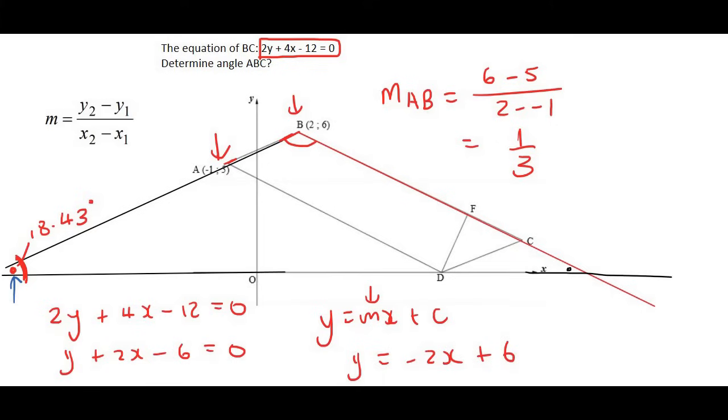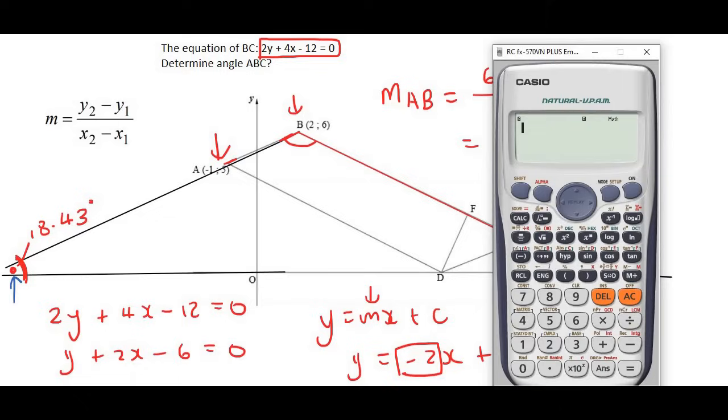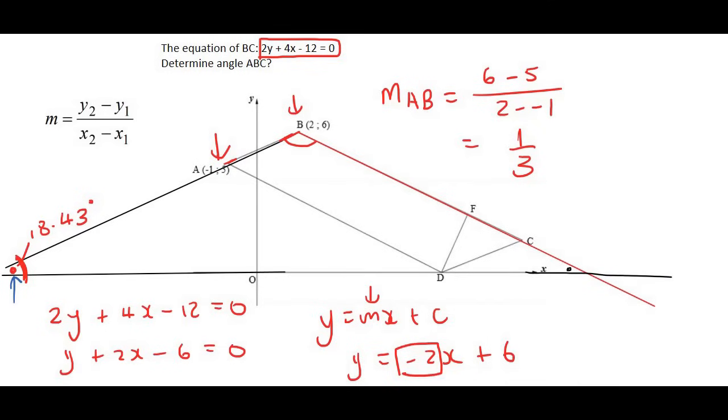So now we have the gradient. It's negative 2. Now if you've watched any of my other videos on angle of inclination, you would see that we mustn't put the negative on the calculator. What we do is we just say shift tan of 2. And that was 63.43. So we'll call that our reference angle.